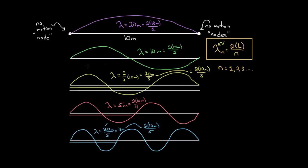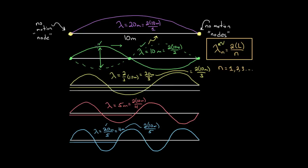This equation assumes you have a node-node standing wave on a string, which is almost always the case since on all stringed instruments both ends are fixed. To recap: when you confine a wave into a region, it reflects off boundaries and overlaps with itself, causing constructive and destructive interference. For particular wavelengths, you set up a standing wave — the wave oscillates up and down instead of traveling left to right. Points with no motion are nodes; points of maximum displacement are antinodes. The possible wavelengths are given by λ = 2L/n.